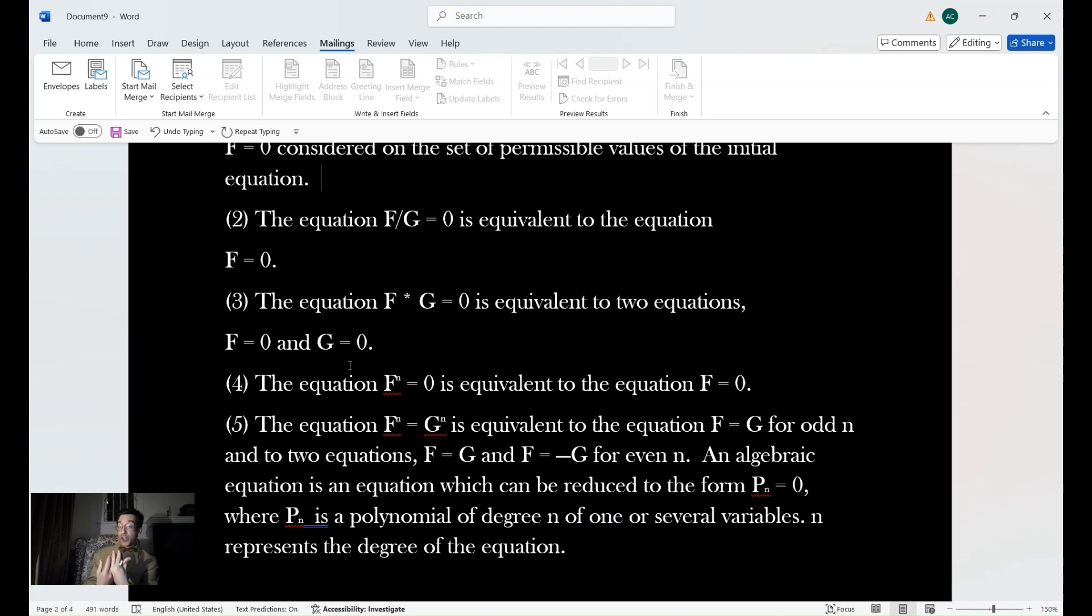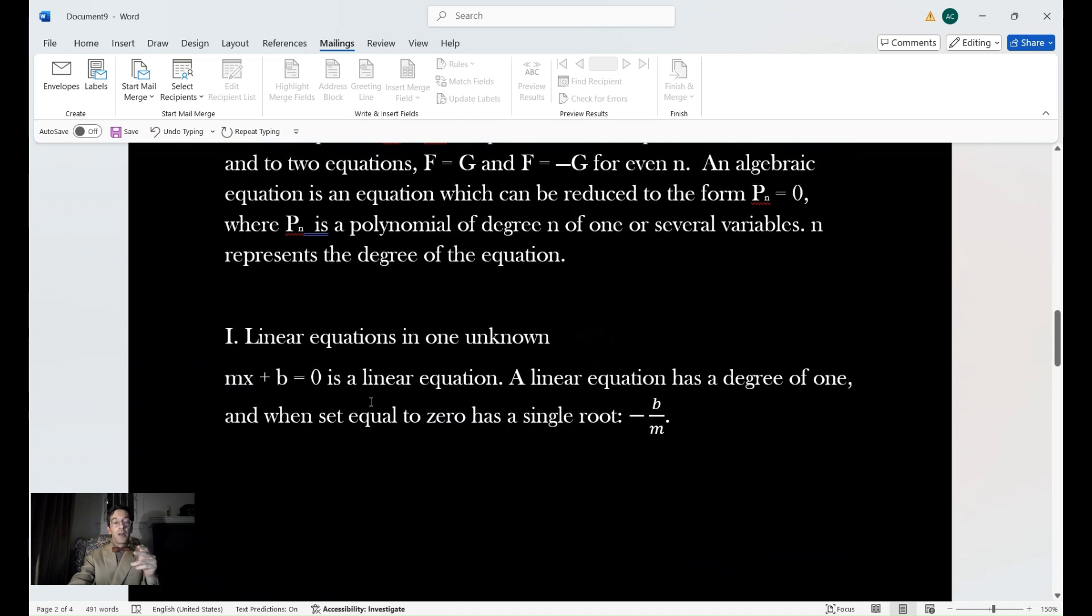If you have an algebraic equation, it's really an equation which can be reduced to the form p sub n equals 0, where p sub n is a polynomial of degree n. It can have one or several variables, and n represents the degree of the equation. For this video, we are dealing with two types. One is linear equations, when you have one unknown, mx plus b equals 0. That is a linear equation. The degree is 1, meaning the highest exponent.